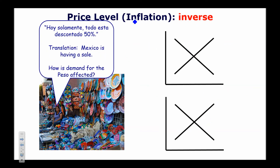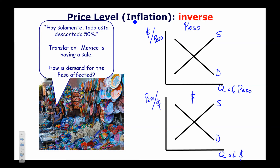Next example — price level, which means inflation. Mexico is having a sale: they've lowered prices to encourage people to visit Mexico or buy Mexican goods. Draw the peso market priced as dollars per peso, and the US dollar market priced as pesos per dollar. Since they're having a sale, we increase our demand for the peso, driving it higher. To pay for those pesos, we increase the supply of our own dollar in the foreign exchange market, which drives down the price of the dollar.